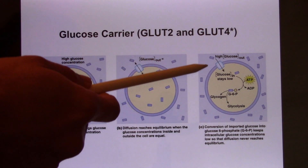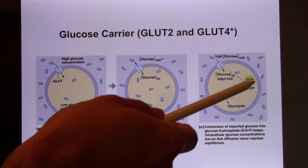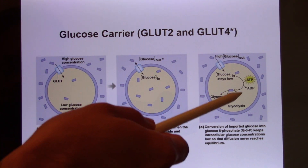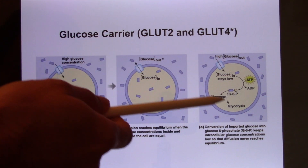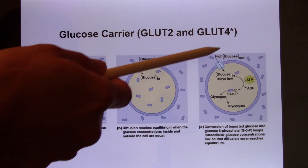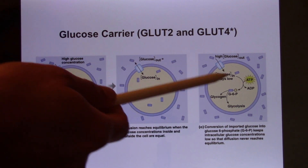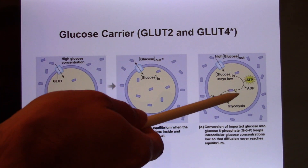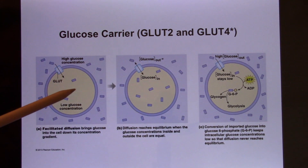The strategy the cell uses is: after glucose moves inside, the cell puts a phosphate group on it — like putting a stem on it — and it becomes G6P (glucose-6-phosphate). Once phosphorylated, this molecule is no longer glucose. This is actually the first step of glycolysis. The cell takes glucose in, converts it to G6P, then proceeds through glycolysis, the citric acid cycle, and the electron transport chain to produce ATP.